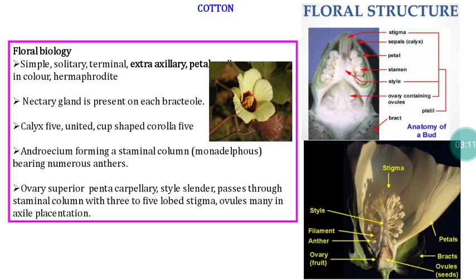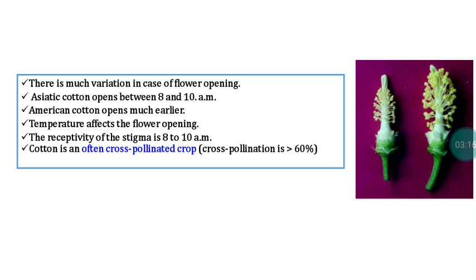This is a floral diagram — a cross section of the flower. Regarding flower opening, some variations are recorded among Asiatic cotton and American cotton. In Asiatic cotton, the flower opens between 8 to 10 a.m., but in American cotton it is a little bit earlier. This is influenced by temperatures, and the receptivity of the stigma is 8 to 10 a.m. Cotton falls under the often cross-pollination category, so the chances of cross-pollination are more than 60 percent.